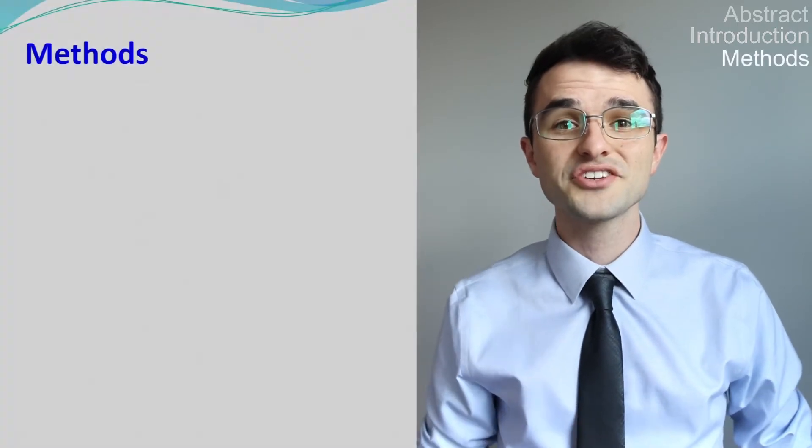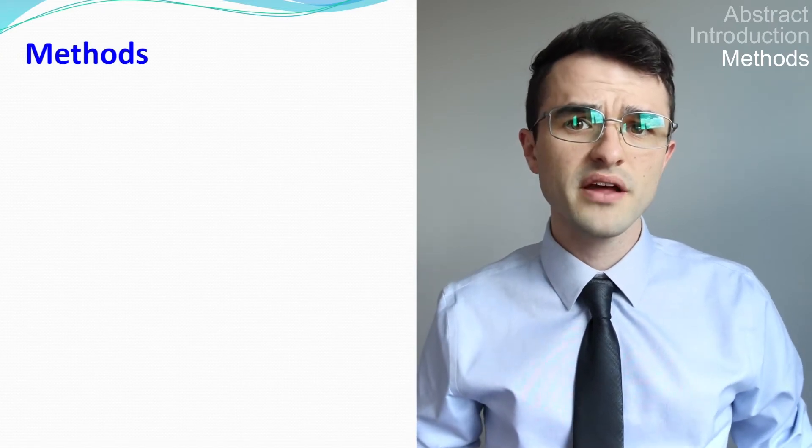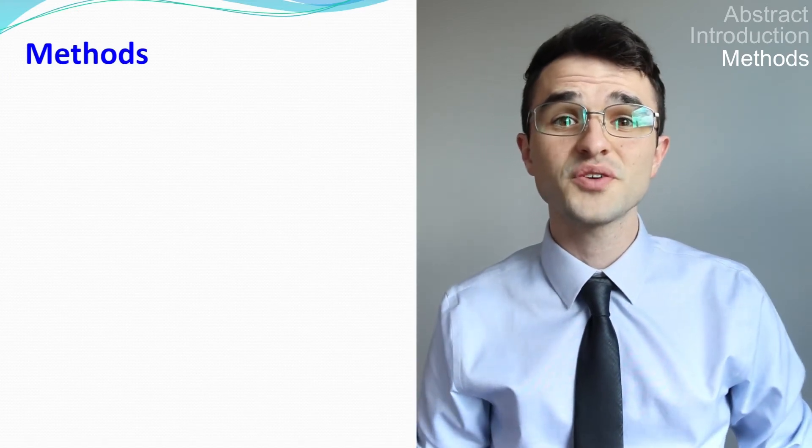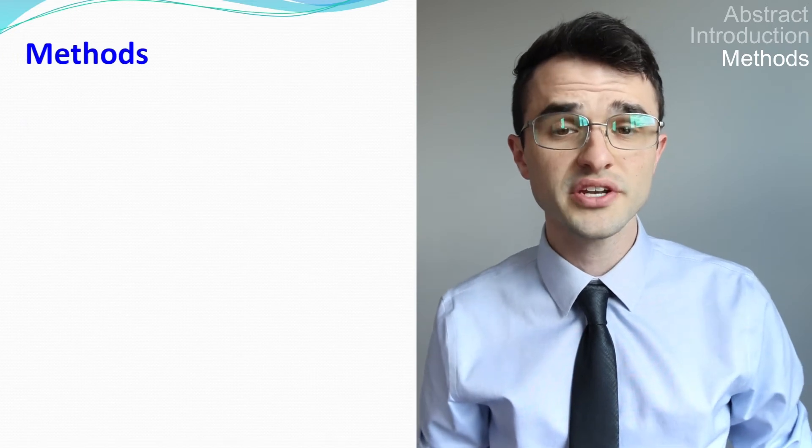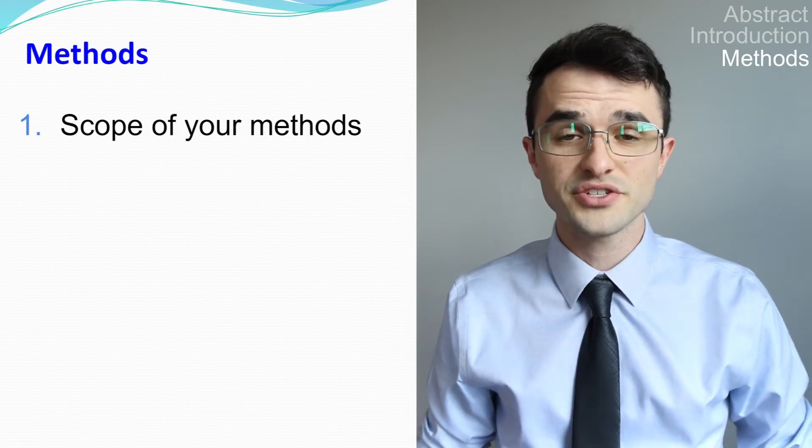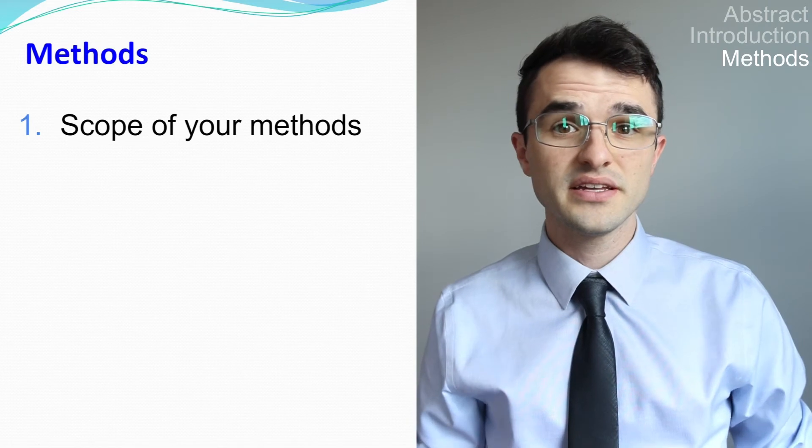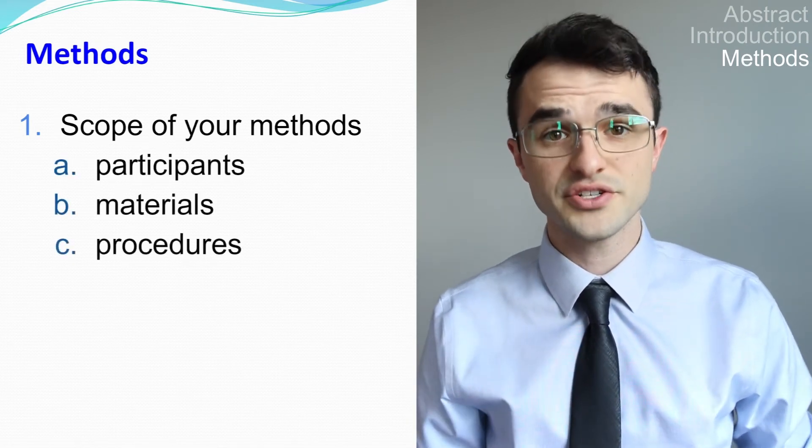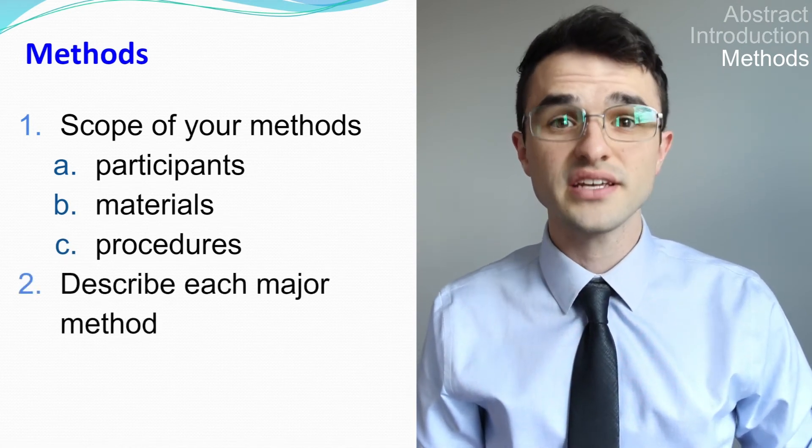The next section is your Methods. For Method sections, you will talk about the study or the experiment that you conducted. This section will be very different for each paper, but generally you should write about the scope of your methods. Based on this information, another researcher should be able to replicate your study. This should include your participants, materials, and procedures. You should describe each major method that you used in your research.